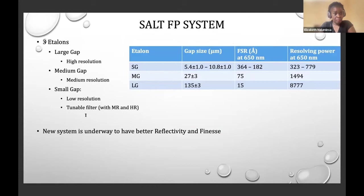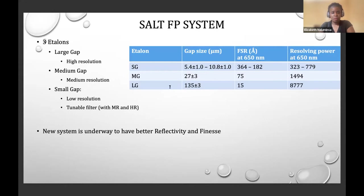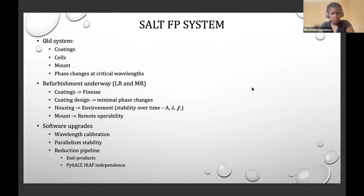As Ankarni mentioned, the medium and low resolution etalons are undergoing refurbishment. Traditionally SALT has had three etalons: a large-gap etalon, medium-gap, and small-gap, used for high, medium, and low resolution studies respectively. The small-gap etalon can also operate as a tunable filter in conjunction with the medium and high resolution modes. With the new refurbished system, we expect better resolving power and improved FSR.